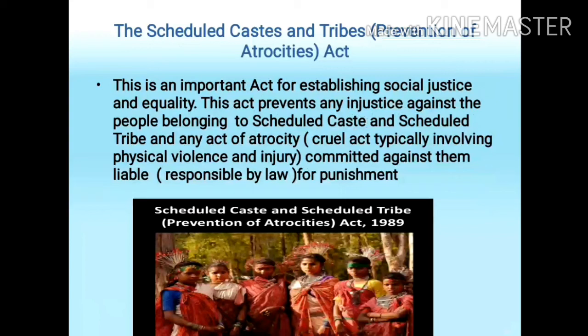The Scheduled Caste and Tribes Prevention of Atrocity Act is an important act for establishing social justice and equality. This act prevents any injustice against people belonging to Scheduled Caste and Scheduled Tribe and any act of atrocity, where atrocity means any type of cruel act typically involving physical violence and injury. If any person is found committing such atrocity, that person is liable — that is, responsible by law — for punishment. This act is made for the protection of Scheduled Caste and Scheduled Tribe people.